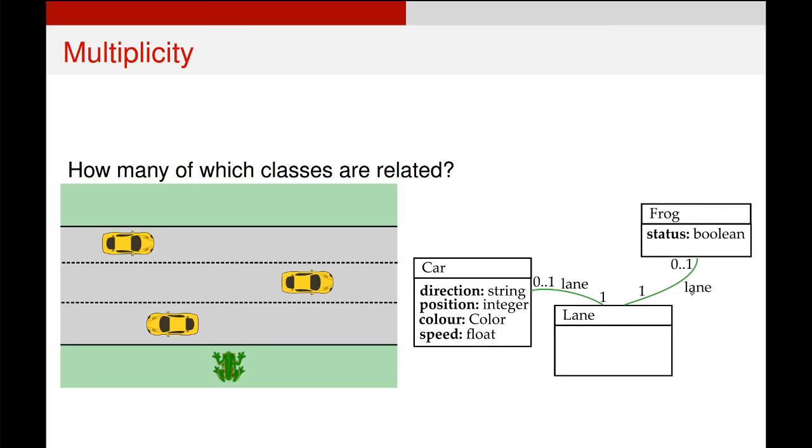It's actually the same relationship that we've got over here with the frog. We're saying every frog must be in a lane. It can't not have a lane, but that each lane either has a frog or doesn't have a frog.